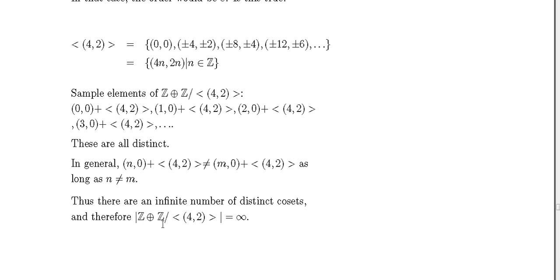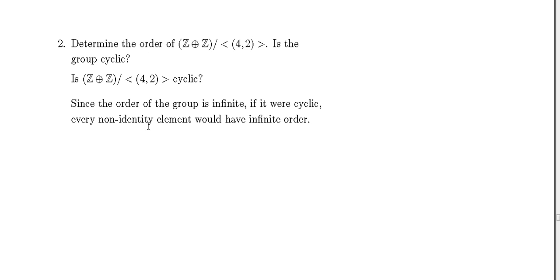So we have an infinite number of distinct cosets. Therefore, the order of Z⊕Z/⟨(4,2)⟩ is infinite. Since we already know the order of the group is infinite, the question becomes: is the group cyclic? If it were cyclic, every non-identity element would have infinite order.